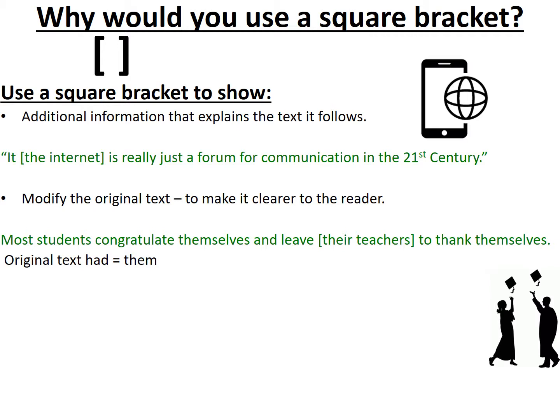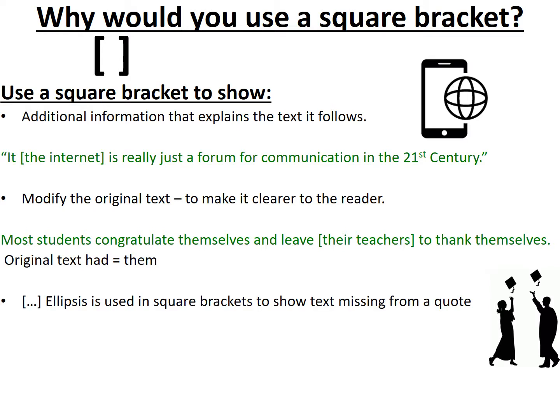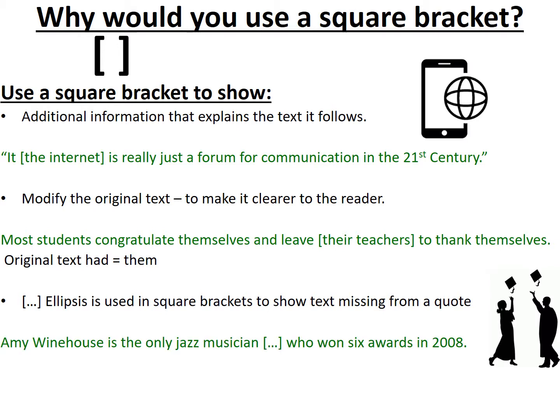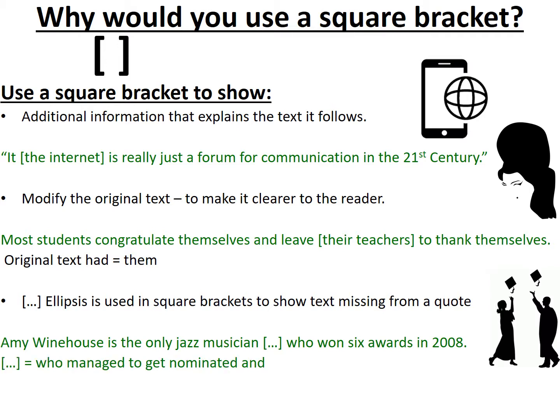Another way we can use a square bracket is by including ellipsis within it — that's three dots within square brackets. The ellipsis in square brackets is used to show that some words are missing in the text, normally from a quote of someone famous. For example: 'Amy Winehouse is the only jazz musician [...] who won six awards in 2008.' That statement was much longer in the original text, so the ellipsis is a quick, nifty way of not having to quote a huge number of words.